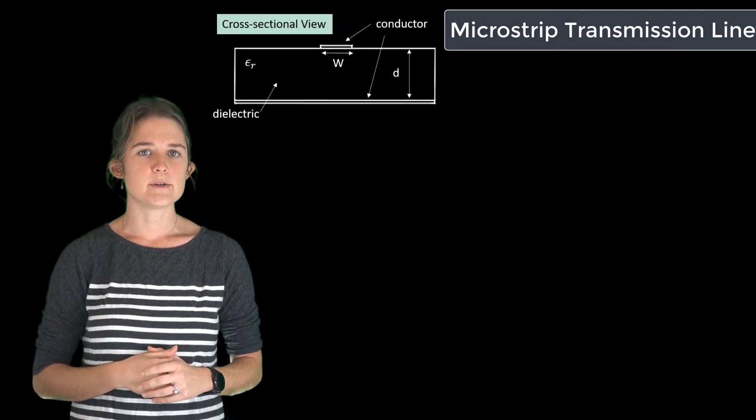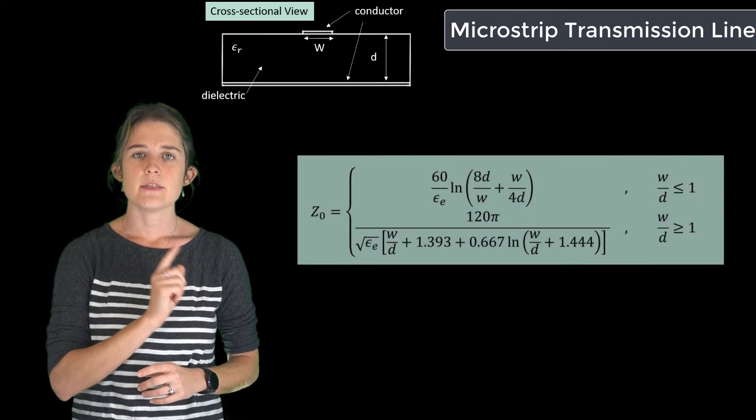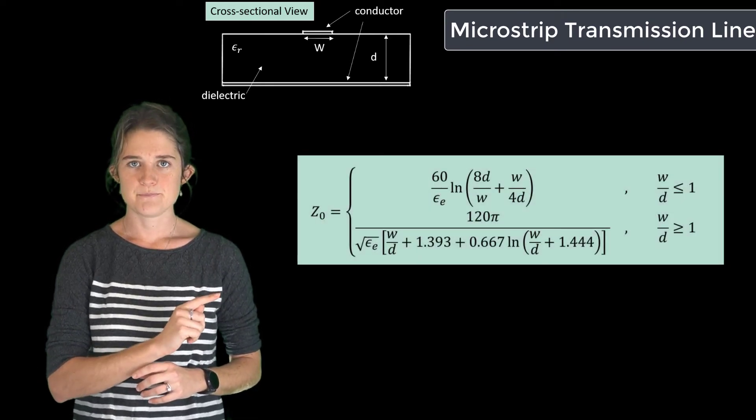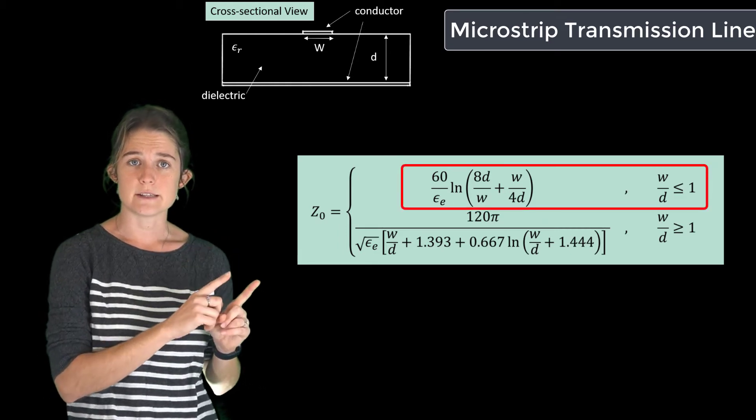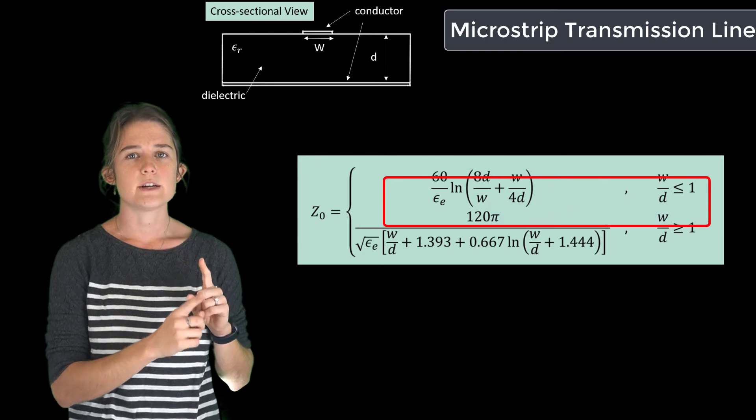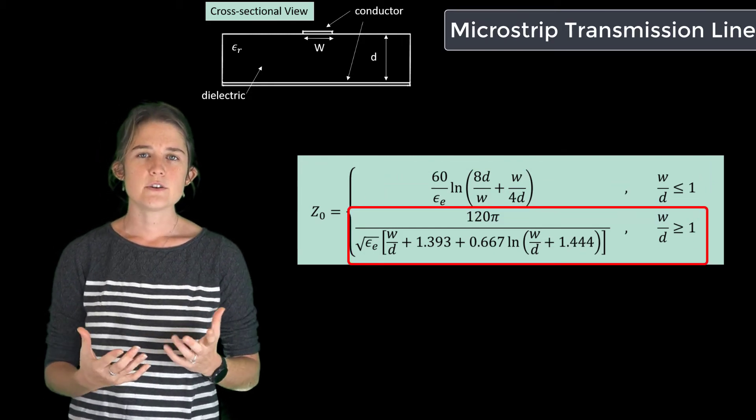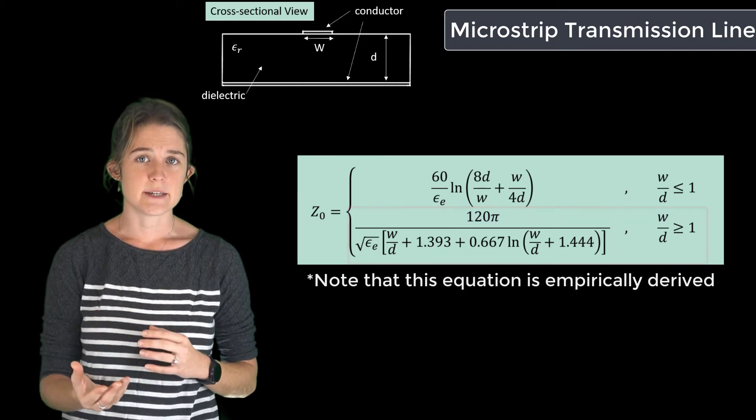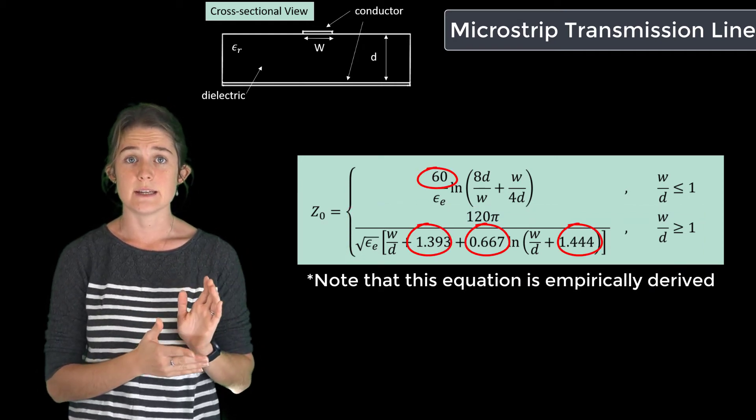If you are given the geometry of a microstrip line and asked to find the characteristic impedance, this is the equation you will use. Note that this is a piecewise function. There's one equation if the ratio of W to D is less than one, and another equation if the ratio of W to D is greater than one. Also note that this equation was derived experimentally, not theoretically, which is why it has these numbers that don't seem related to anything in particular.